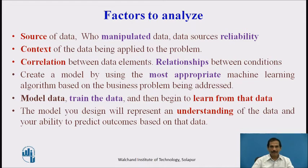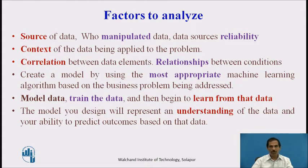We have to model and train the data, then begin to learn from it to generate a prediction as our result. The model you design will present an understanding of the data and an ability to predict outcomes based on that data. For example, you might use semantics — and more accurately, synonyms — to search a particular page with the help of a machine learning algorithm. Genetic algorithms can be used in this environment, and you add a machine learning algorithm related to the semantic aspect, which might generate a result via a decision tree.